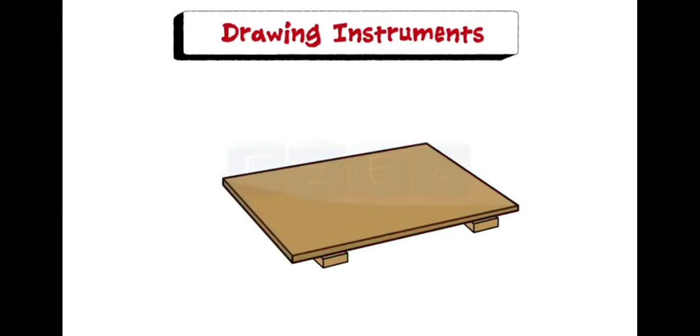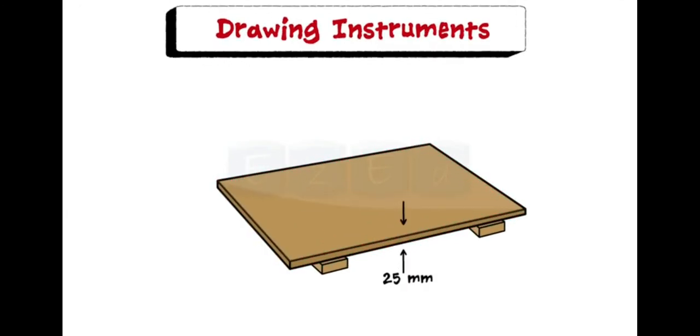Now let us describe each and every instrument. The drawing board is rectangular in shape and is made of wood about 25 mm thick. It is cleated at the back by two patterns to prevent warping. The surface of the board should be smooth, and it is used to keep the drawing paper. There is a working edge at the side of the drawing board.